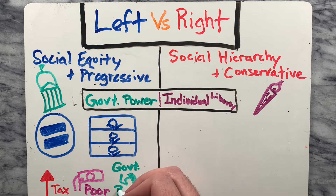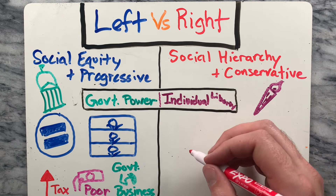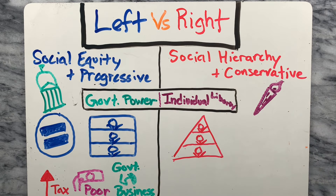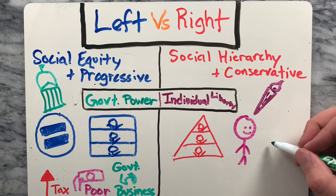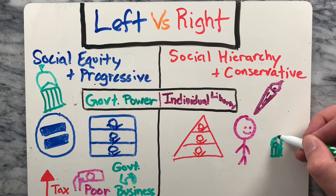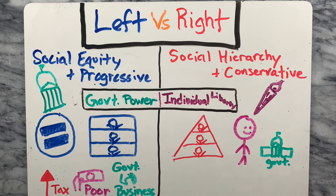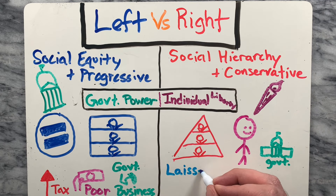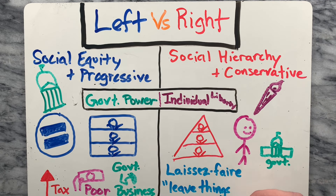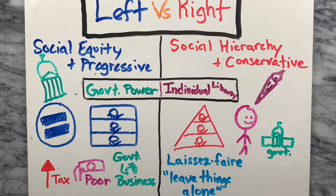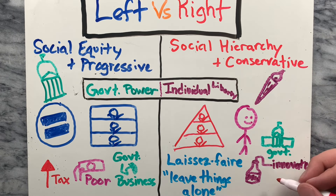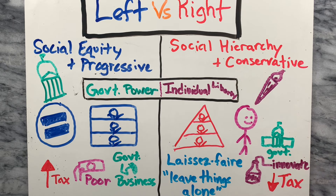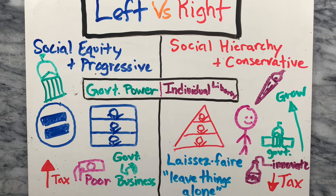If we take a look at the right, the right would say that a certain level of social inequality is unavoidable and that the government should play a limited role in people's lives. They strive to support a laissez-faire approach to the economy. Laissez-faire is a French term which roughly translates as 'leave things alone.' Those on the right believe that less business regulation will help innovation and lowering taxes on businesses will help them grow.